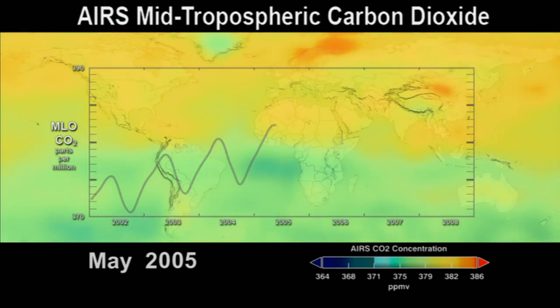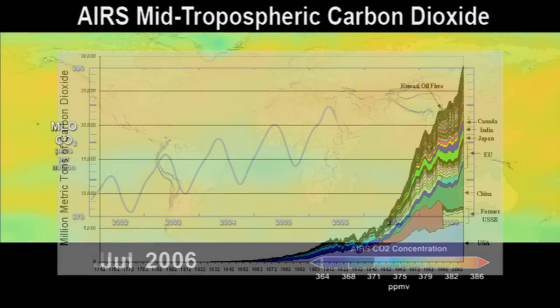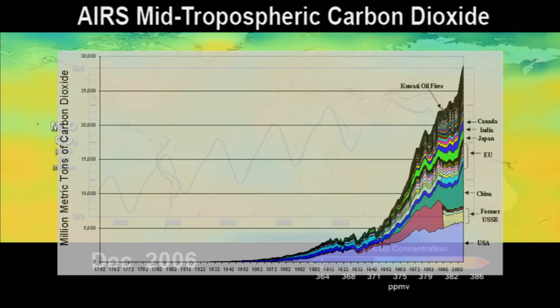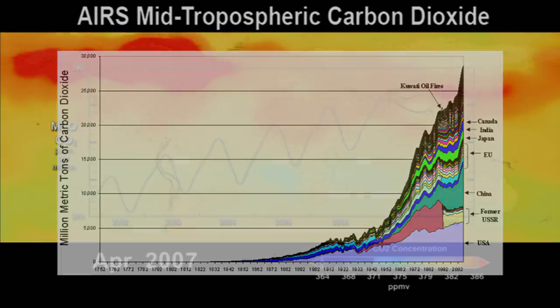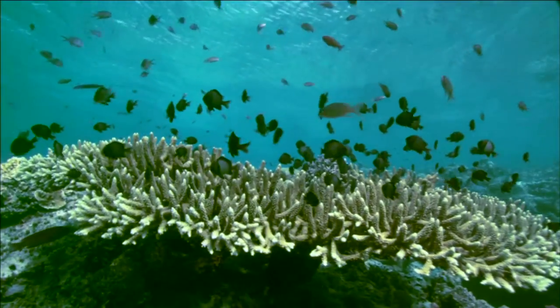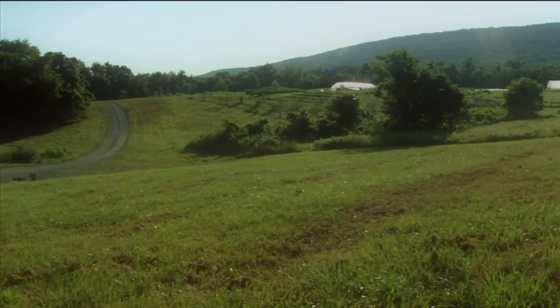In addition to direct measurements of atmospheric CO2 concentrations, there are detailed records of how much coal, oil, and natural gas is burned each year. Through science, estimates are made of how much CO2 is being absorbed on average by the oceans and plant life on land.